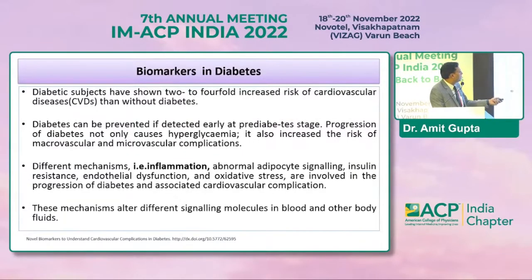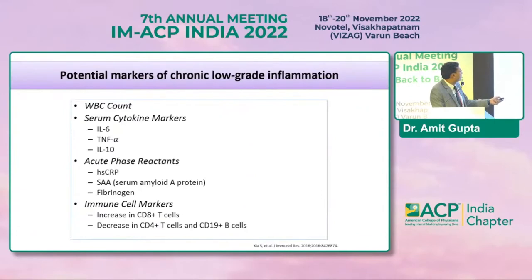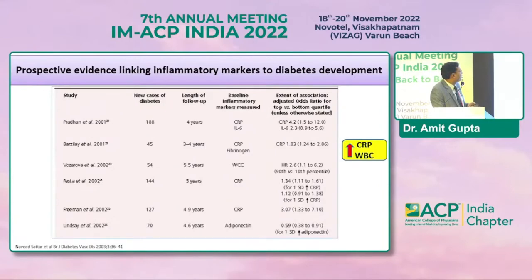Various biochemical markers are relevant here: WBC count, serum cytokine markers like IL-6, TNF-alpha, and IL-1beta, acute phase reactants like high-sensitivity CRP, serum amyloid A protein, fibrinogen, and immune cell markers like CD8+ T cells, CD4 T cells, and CD19 B cells. Studies — including Pradhan et al. with 18,000 cases and 4 years of follow-up — found that elevated levels of CRP, IL-6, fibrinogen, white cell count, and adiponectin can incite inflammation and lead to dysglycemia.